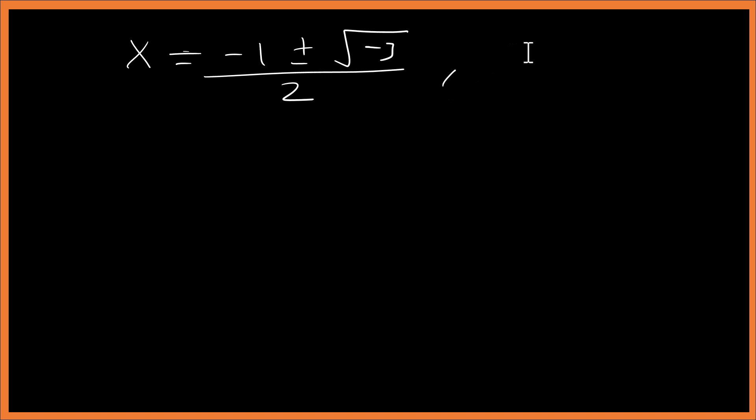Now from complex numbers, √(minus 1) is the same as i. From here you can write this as minus 1 plus or minus, like 1 times 3.